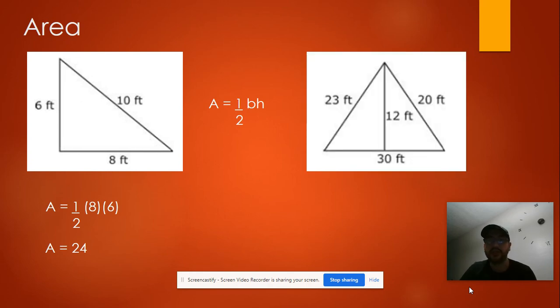Now, for this other example, the base will be 30, and the height will be 12. So the area will be 1/2 times 30 times 12, which is 180. And that's how you find the perimeter and the area of the triangle.